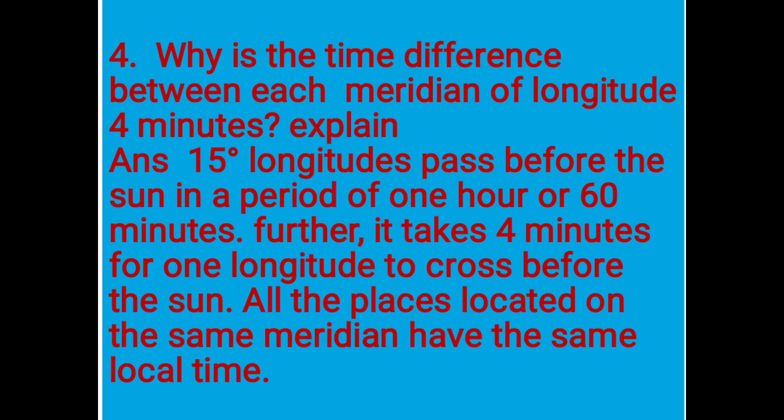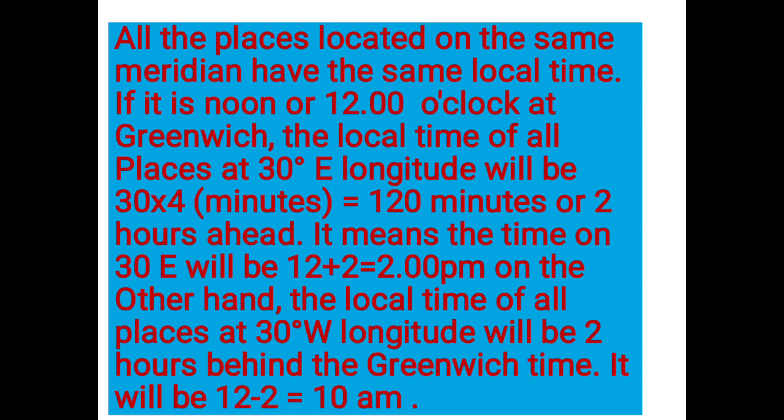Question 5: All the places located on the same meridian have the same local time. If it is noon or 12 o'clock at Greenwich, the local time of all places at 30 degrees east longitude will be 30 × 4 minutes = 120 minutes, or 2 hours ahead. It means the time at 30 degrees east will be 12 + 2 = 2 pm. On the other hand, the local time of all places at 30 degrees west longitude will be 2 hours behind Greenwich time, making it 12 − 2 = 10 am.